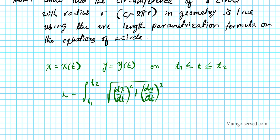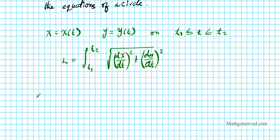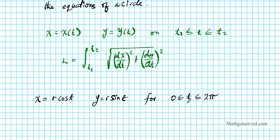We need to show this results in C equals 2 pi r. For our circle, x equals r cosine t and y equals r sine t, with t going from 0 to 2 pi for a complete rotation. Applying the arc length formula, 0 is our lower bound t1 and 2 pi is our upper bound t2. We need to find dx/dt and dy/dt and then plug them in and evaluate the integral.